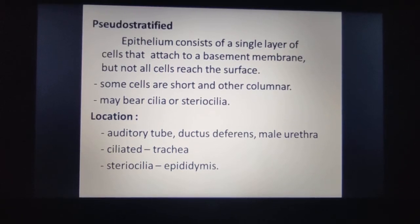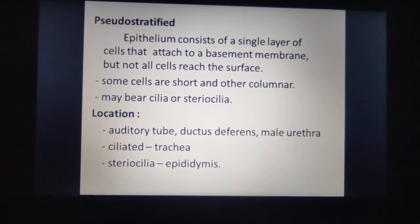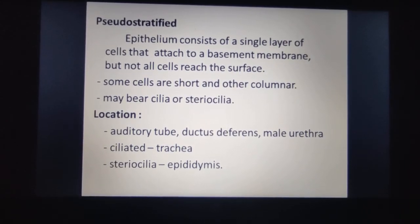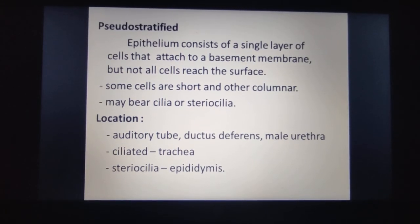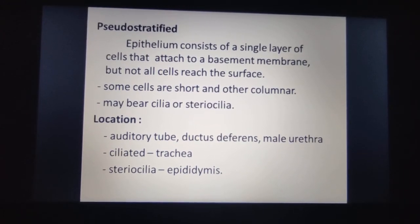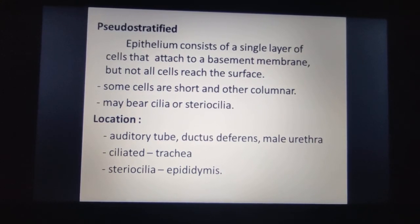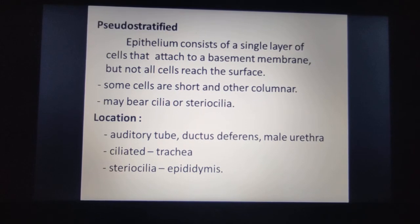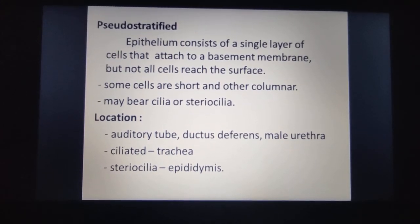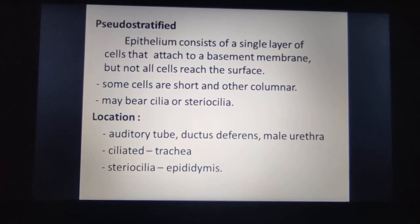Pseudo-stratified epithelium consists of a single layer of cells that attach to the basement membrane, but not all cells reach the surface. Some cells are short and others are columnar. They may bear cilia or stereocilia. Pseudo-stratified epithelium is found in the auditory tube, ductus deferens, and male urethra. Ciliated pseudo-stratified epithelium is found in the trachea; with stereocilia, it is found in the epididymis.